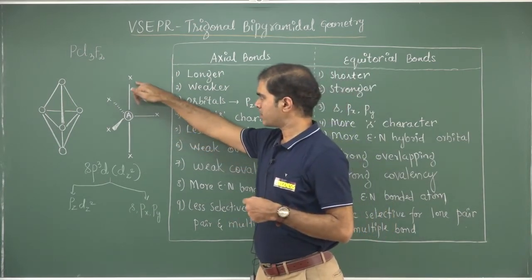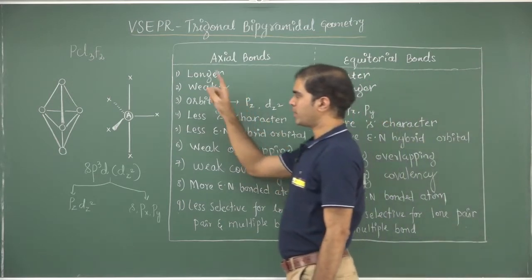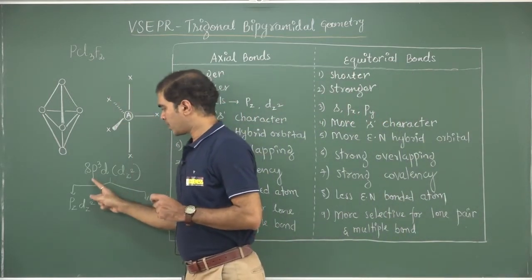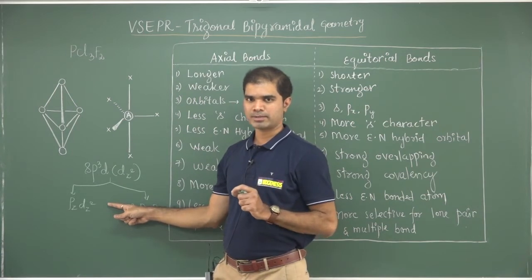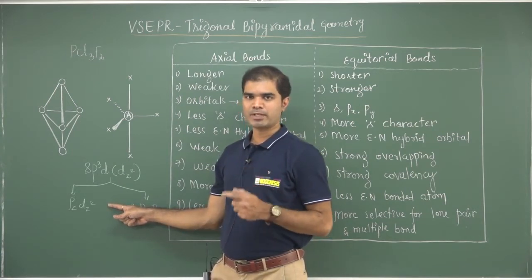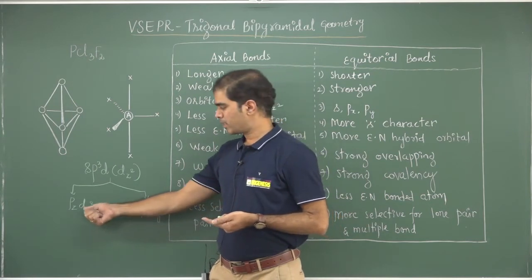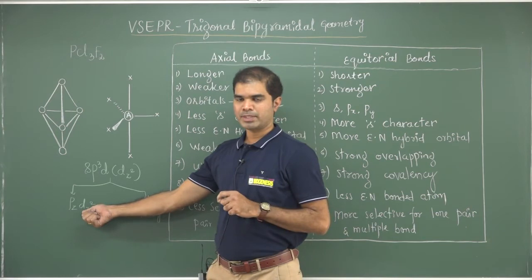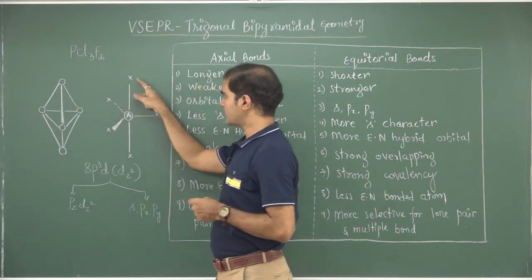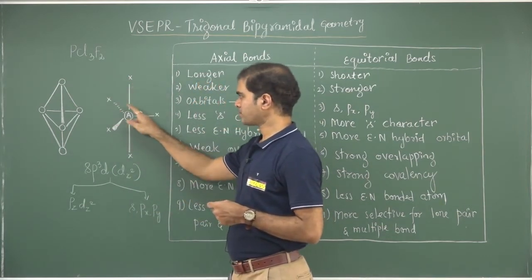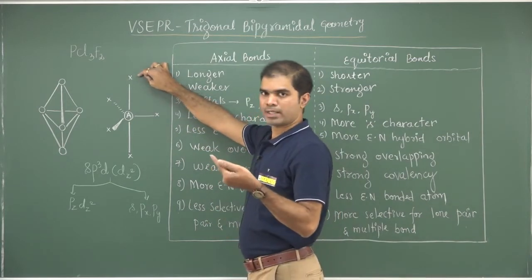Which atom chooses which orbital? Suppose we have fluorine and chlorine — fluorine is more electronegative. Since fluorine is more electronegative, it will definitely choose an axial orbital, because axial orbitals are formed from Pz and dz² where S participation is very, very less. Whenever S participation is more, the electronegativity of that hybrid orbital increases. So the electronegativity of equatorial orbitals is larger, whereas the electronegativity of axial hybrid orbitals is smaller — meaning a less electronegative hybrid orbital attracts the more electronegative atom.